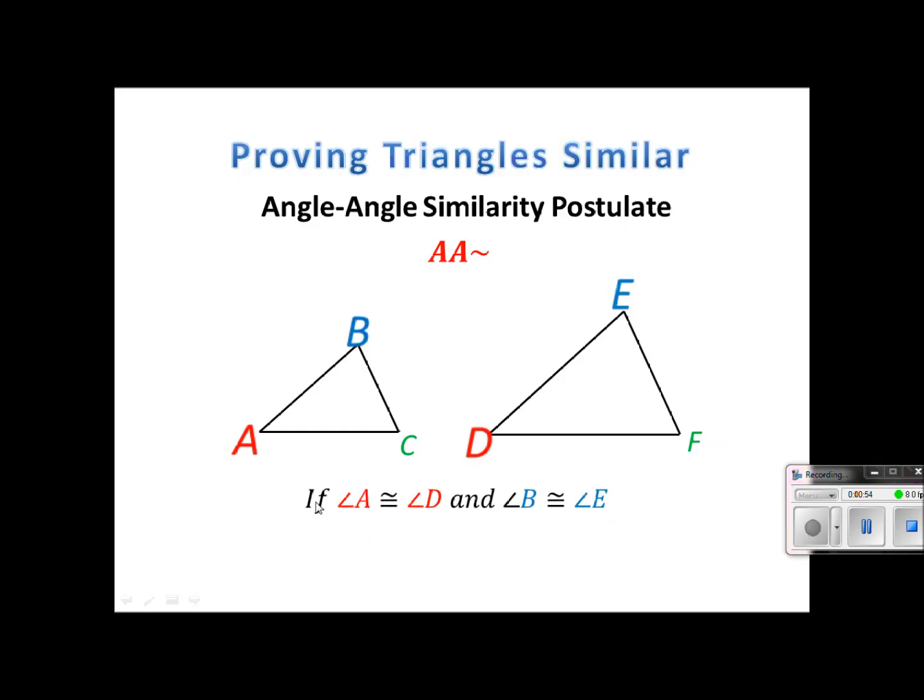So again, putting this together, if A is congruent to D and B is congruent to E, then ABC or triangle ABC is similar to triangle DEF.